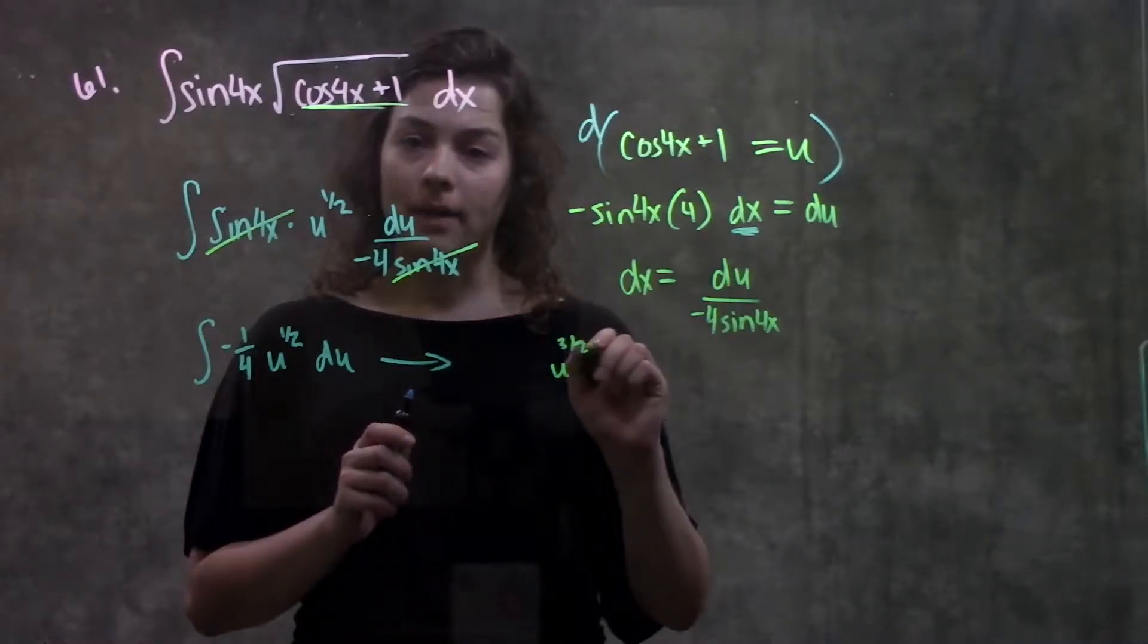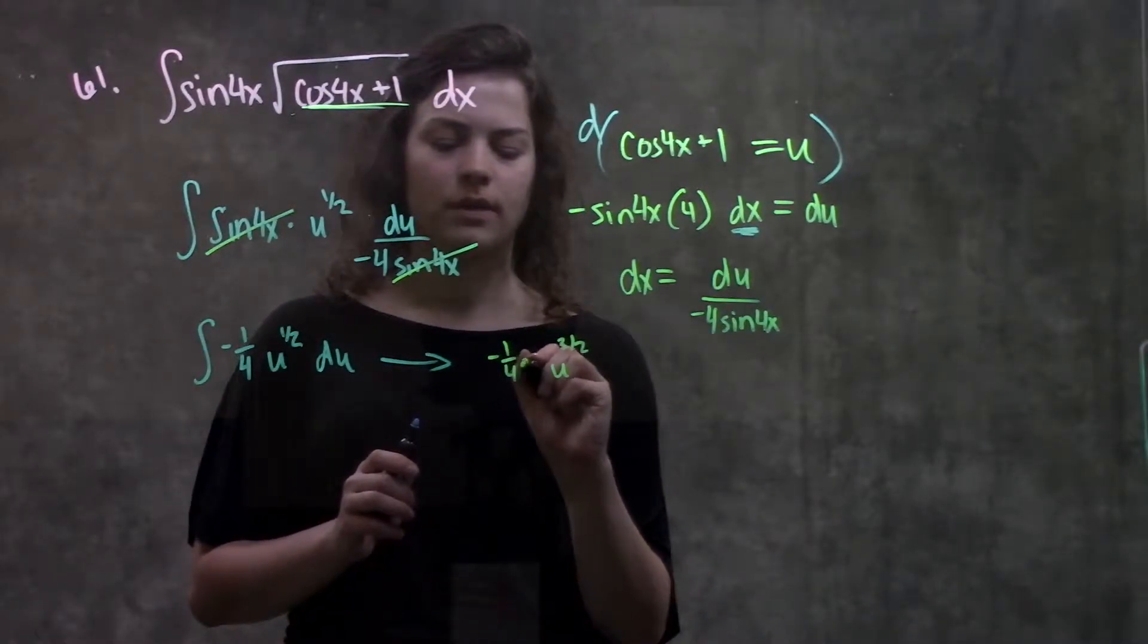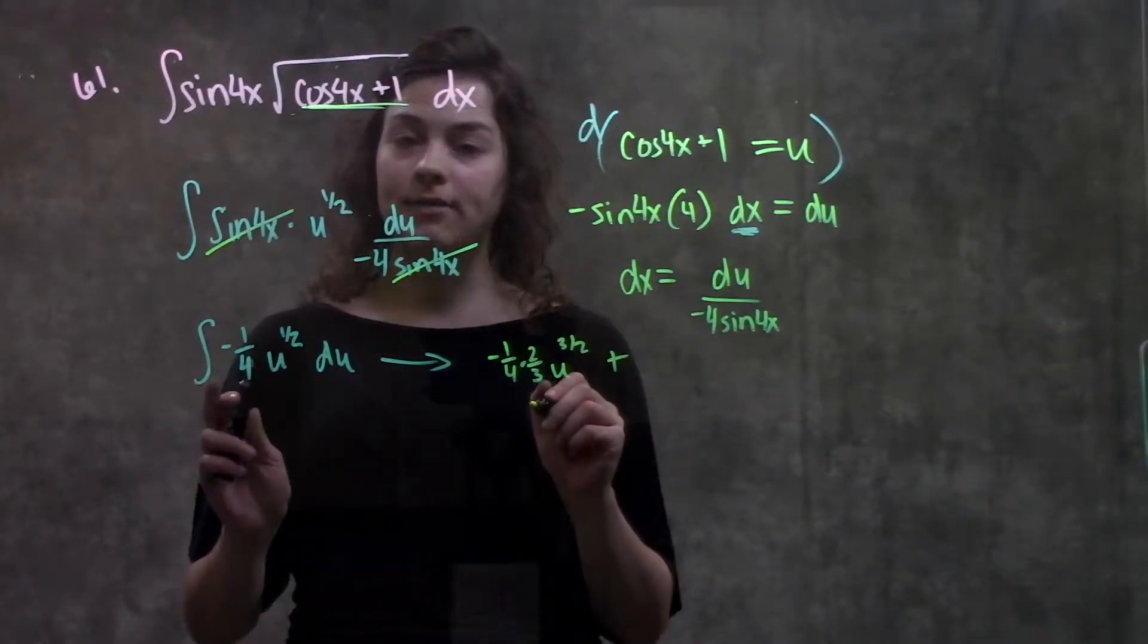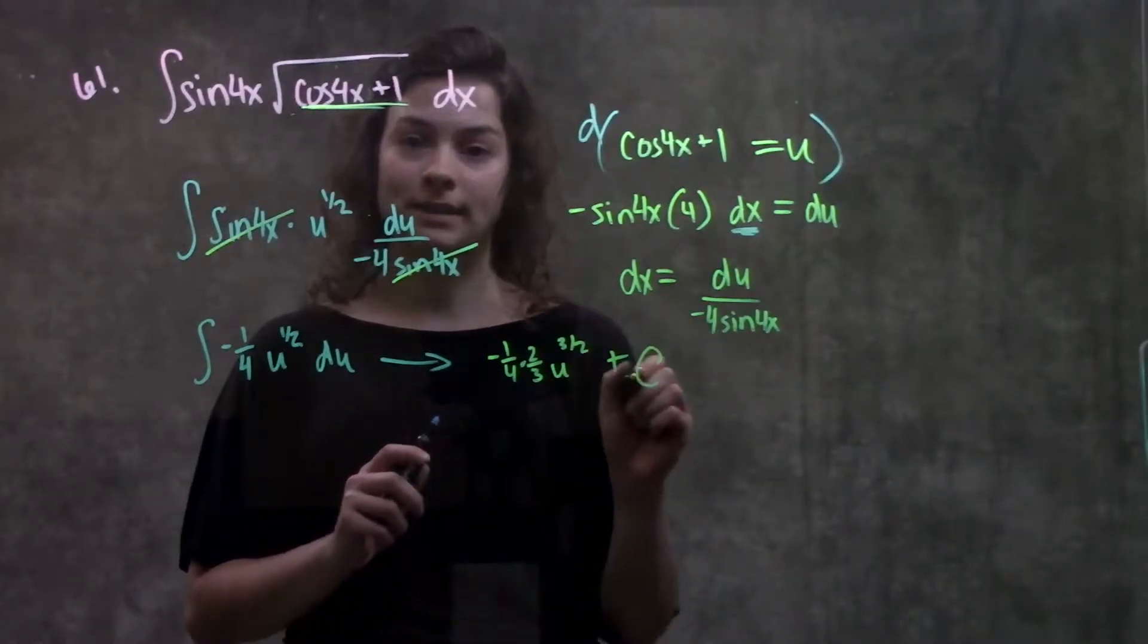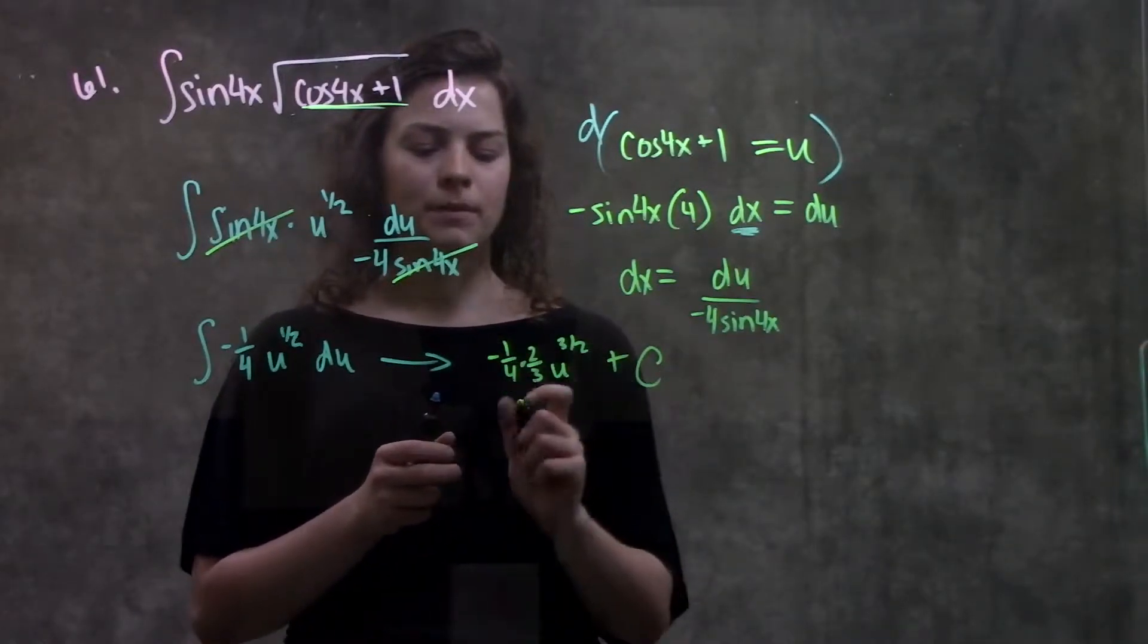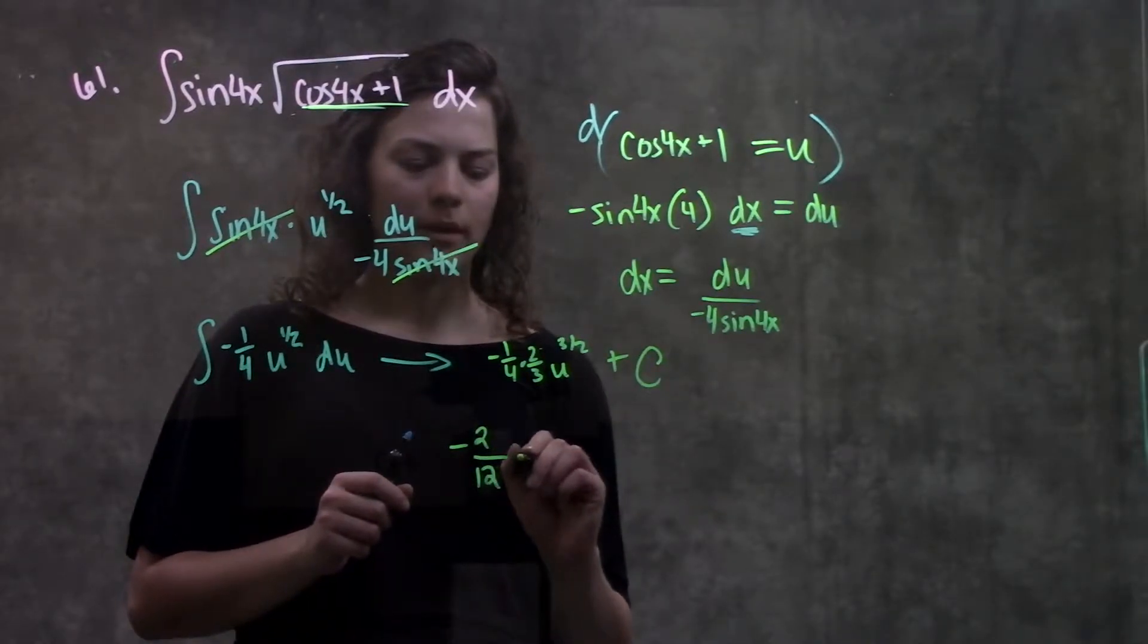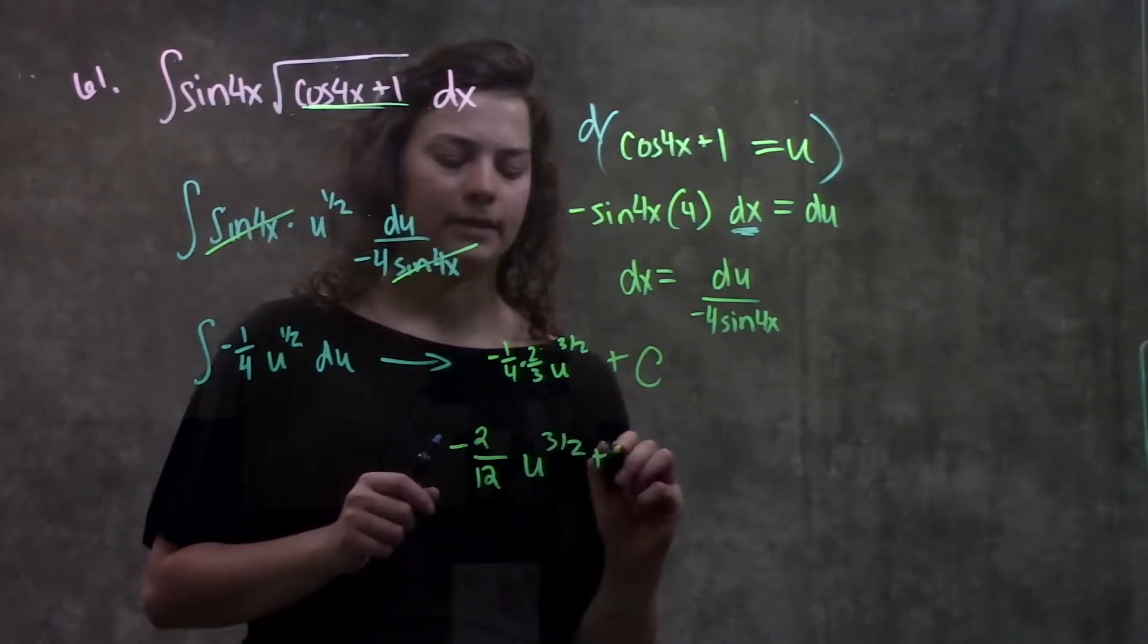And then divide by this new number, so it becomes minus 1 fourth times 2 over 3. And remember, this is an indefinite integral, so I have to add a plus c over here. Simplifying this out a little bit, multiplying these two fractions together, I get minus 2 over 12 u to the 3 halves plus c.